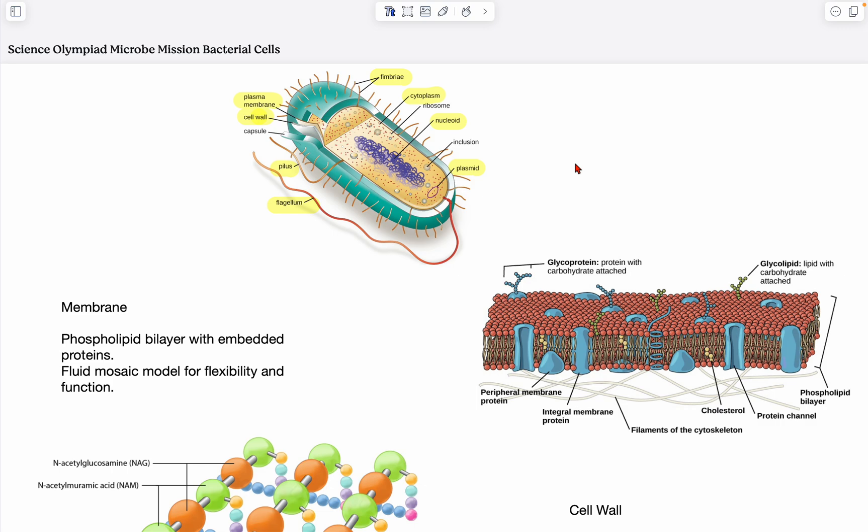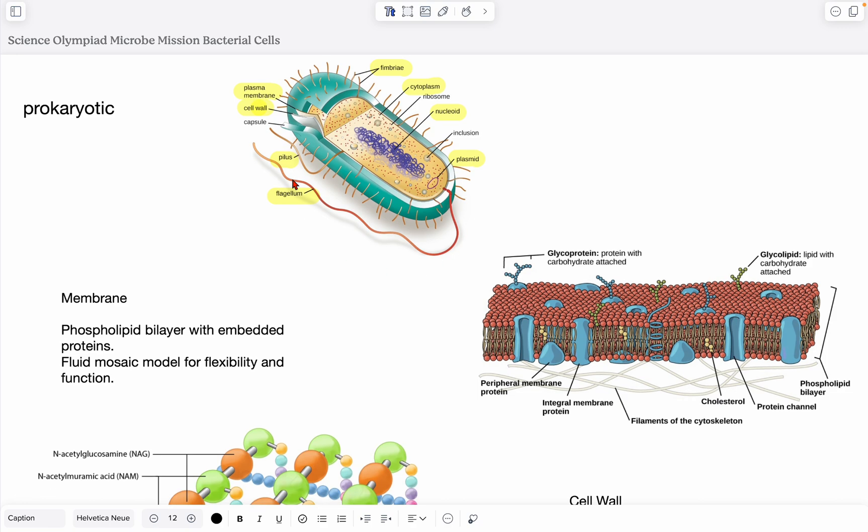So, bacterial cells are prokaryotic, which means that they lack a true nucleus and also membrane-bound organelles. Everything just kind of floats in the center and nothing is bound by a membrane, or the organelles aren't bound by a membrane.